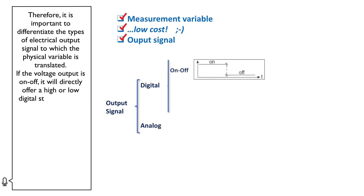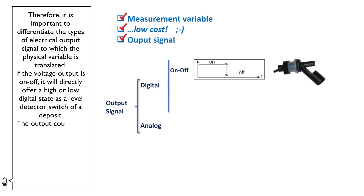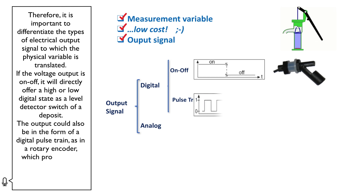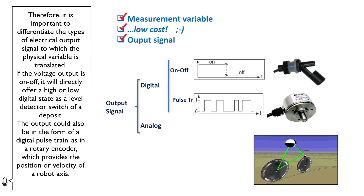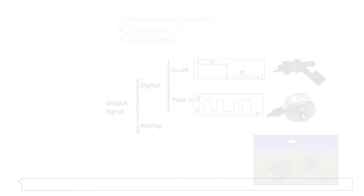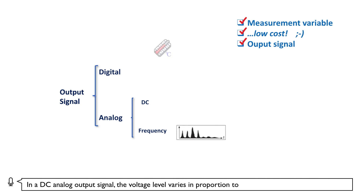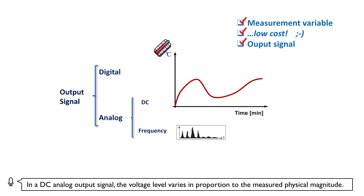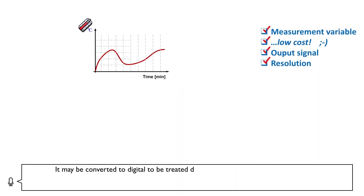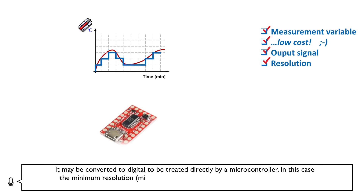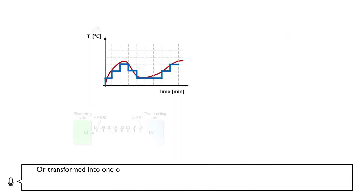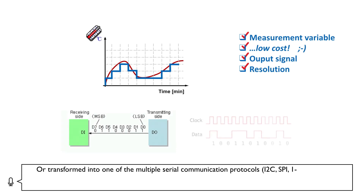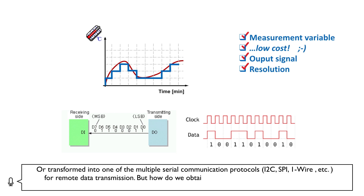If the voltage output is on-off, it will directly offer a high or low digital state, as in a level detector switch of a deposit. The output could also be in the form of a digital pulse train, as in a rotary encoder which provides the position or velocity of a robot axis. In a DC analogue output signal, the voltage level varies in proportion to the measured physical magnitude. It may be converted to digital for a microcontroller, where minimum resolution should be taken into account, or transformed into one of the many serial communication protocols — I2C, SPI, one-wire, etc. — for remote data transmission.